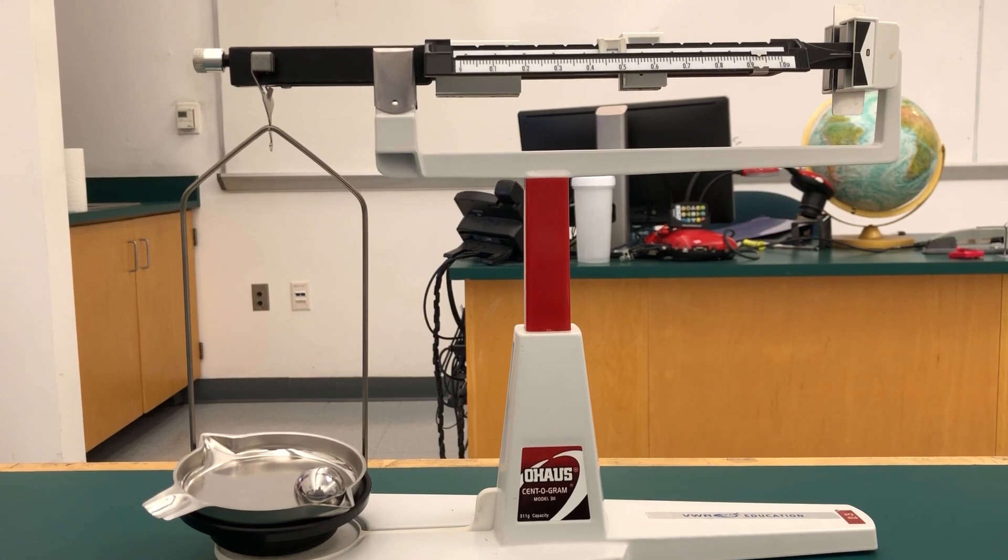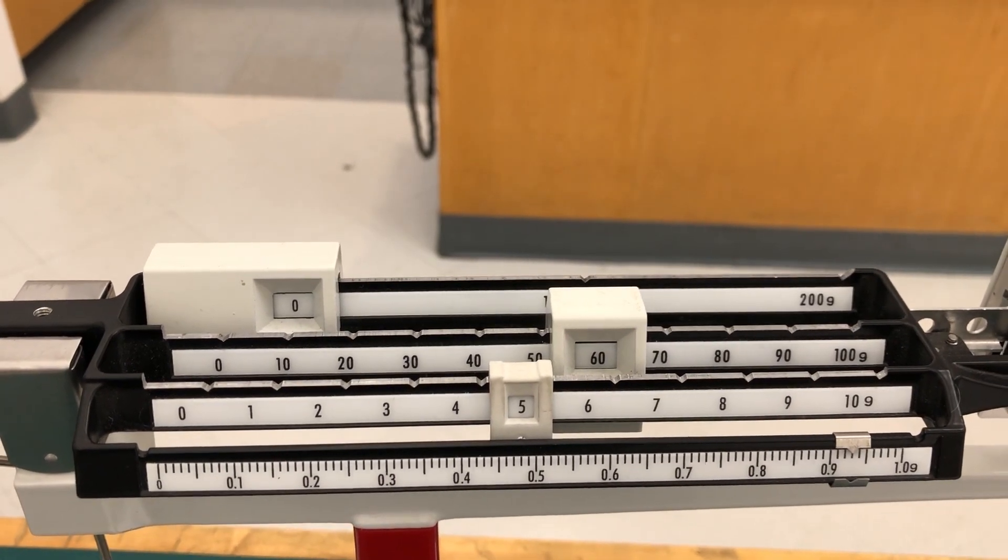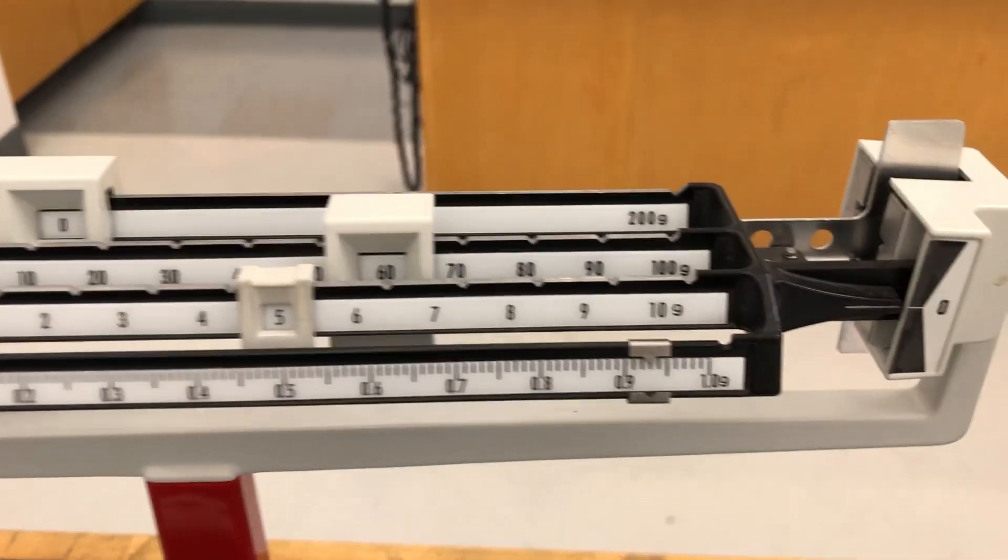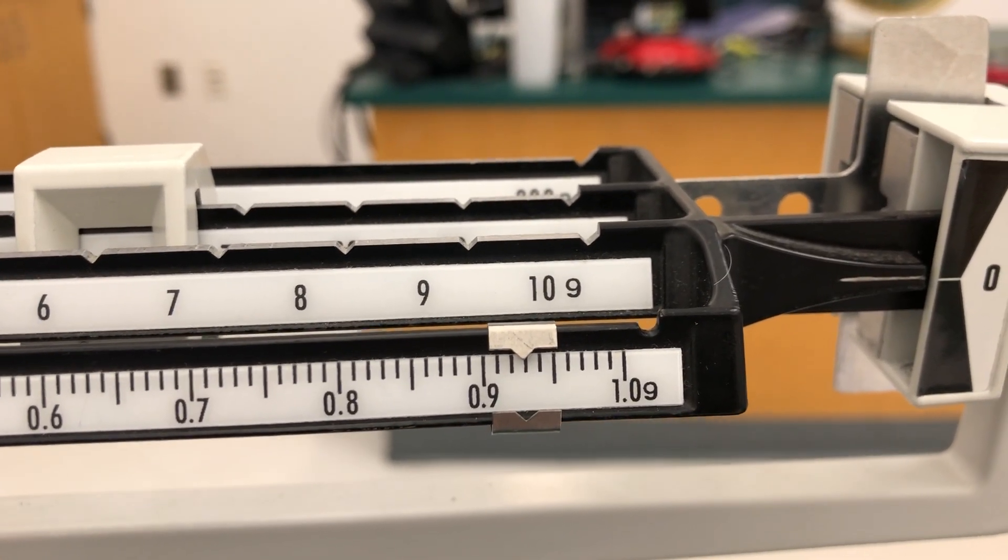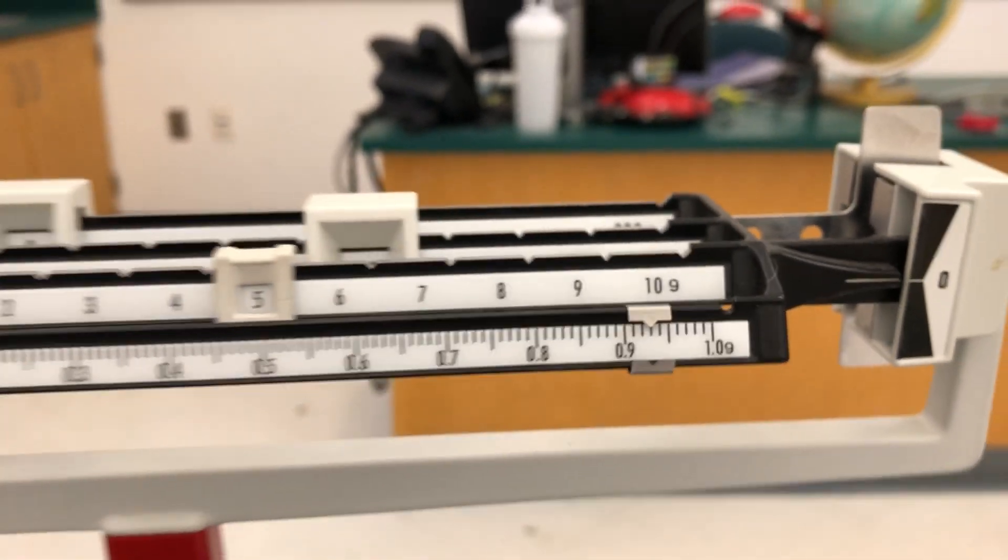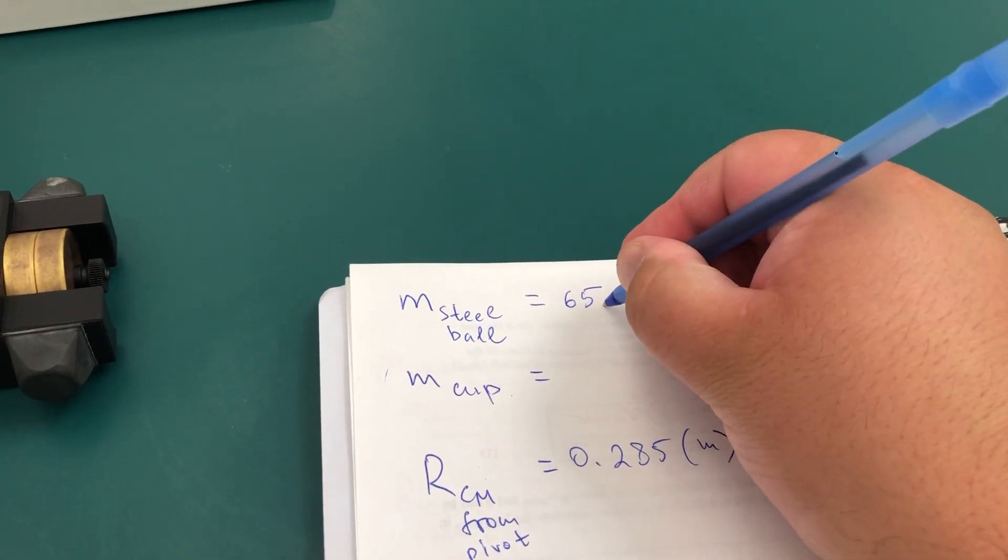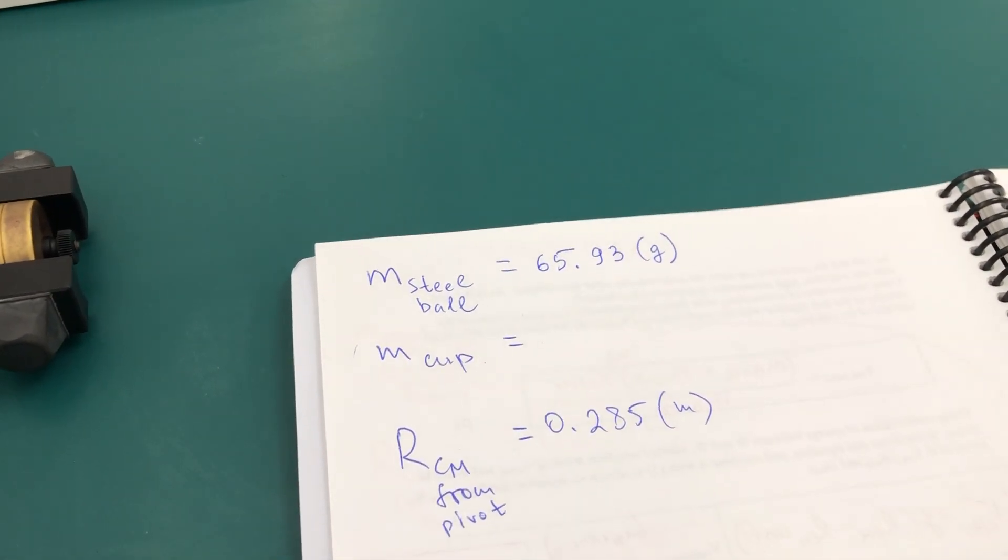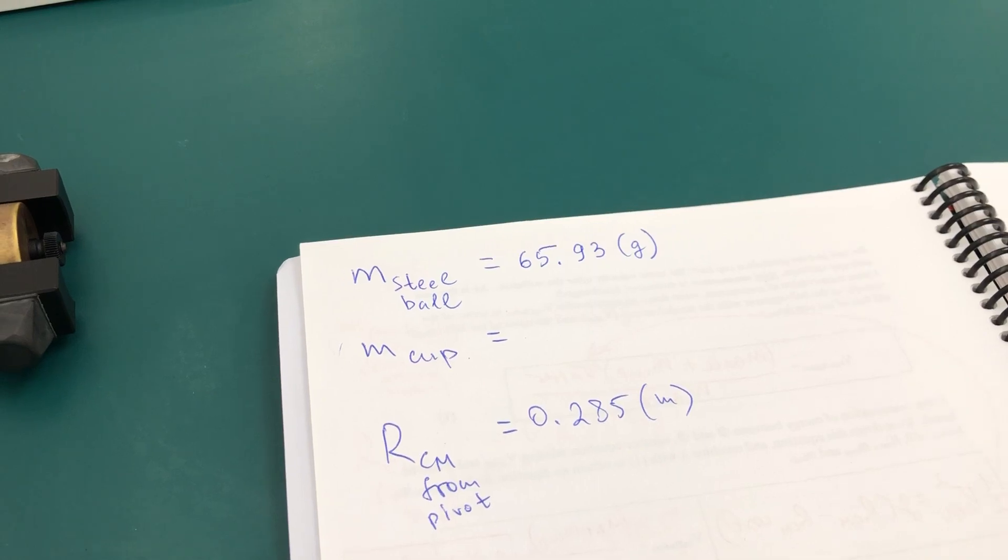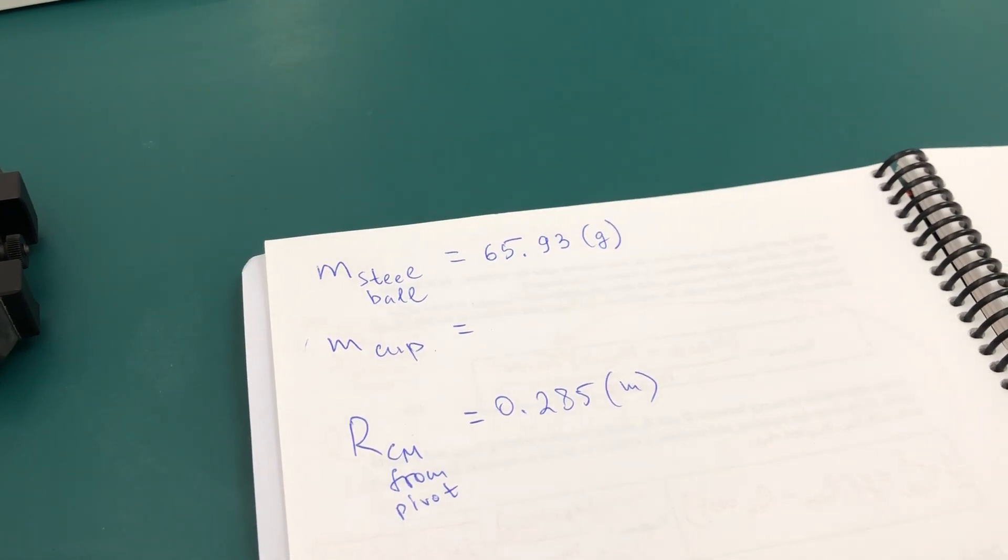So the mass of the steel ball is 65 grams and point nine three. Let's write that down. 65.93 grams. Be careful, that's not kilograms, it's not system international, so in my calculations convert to system international.